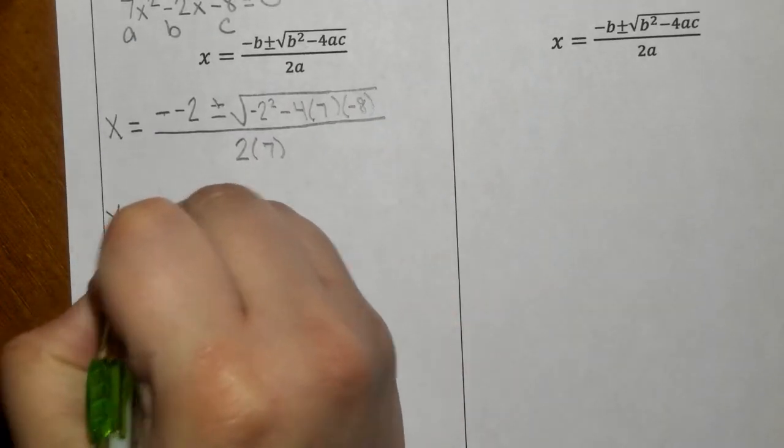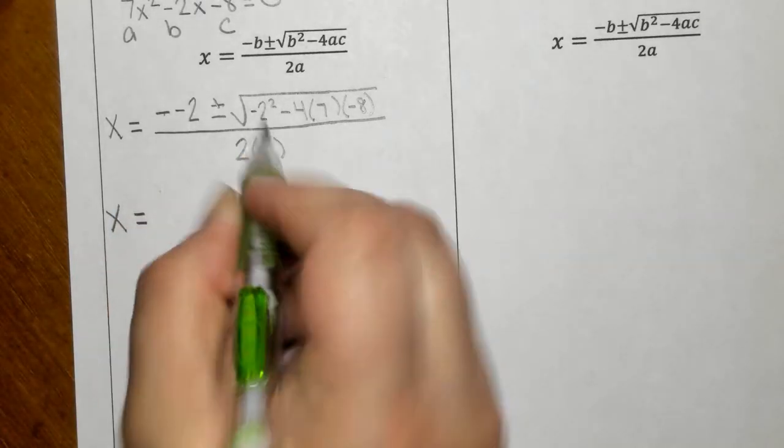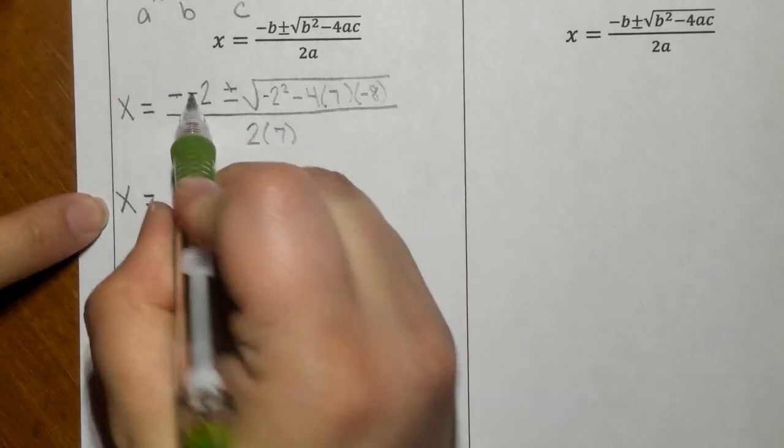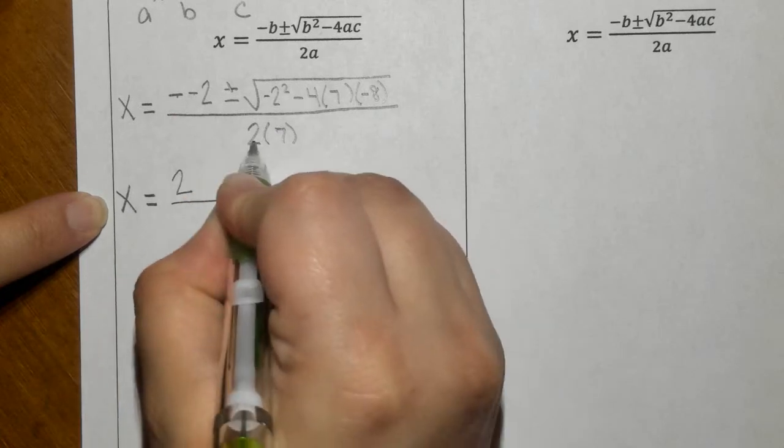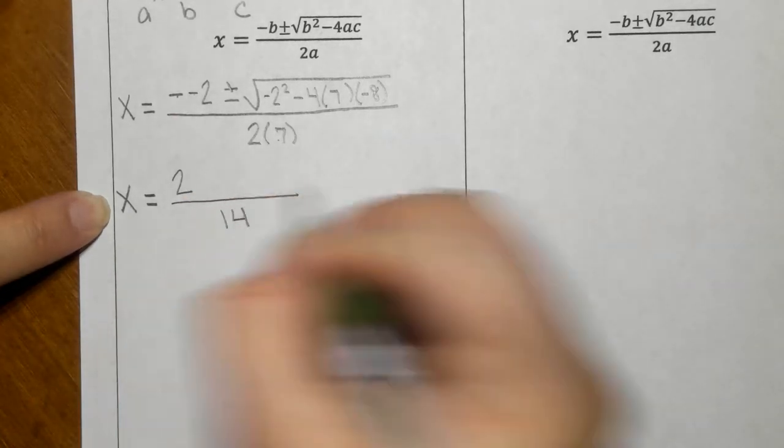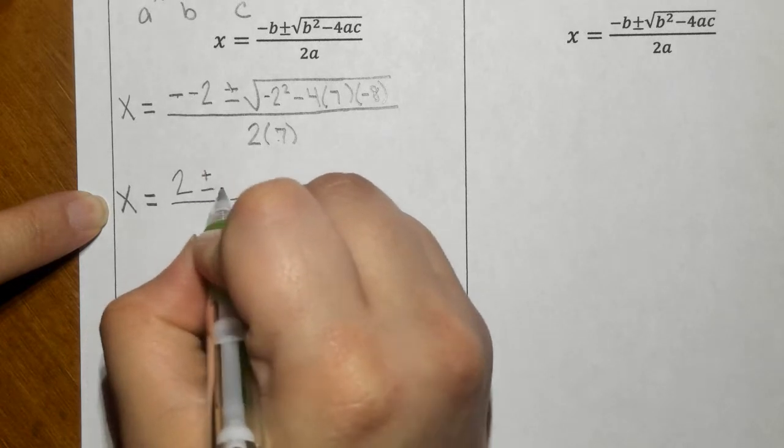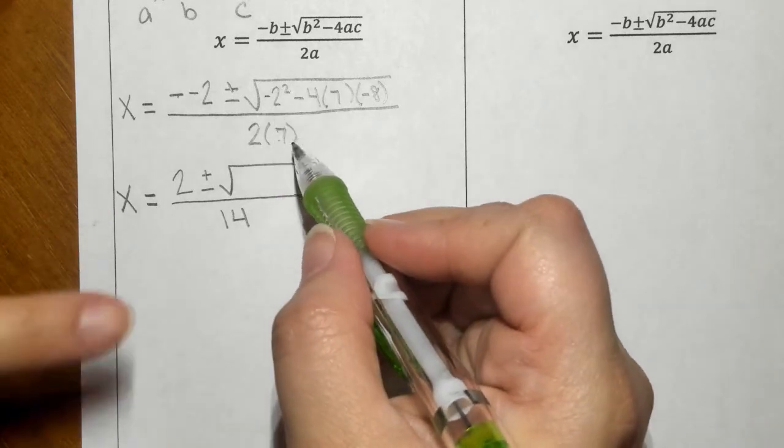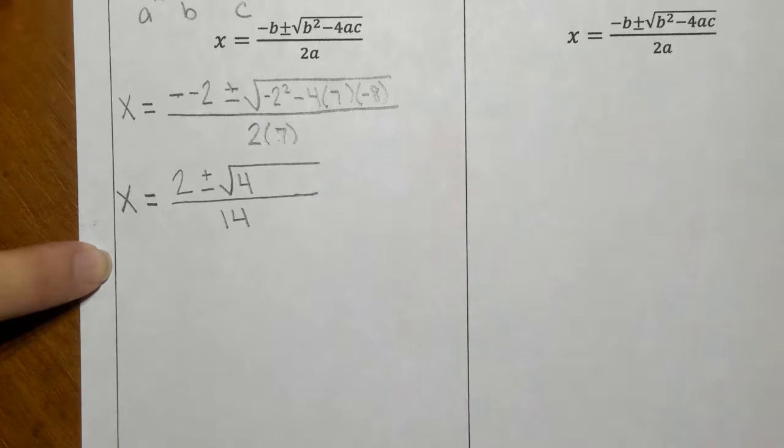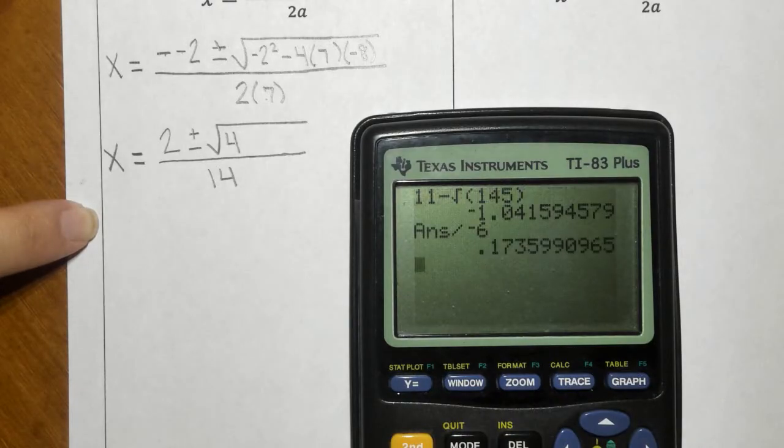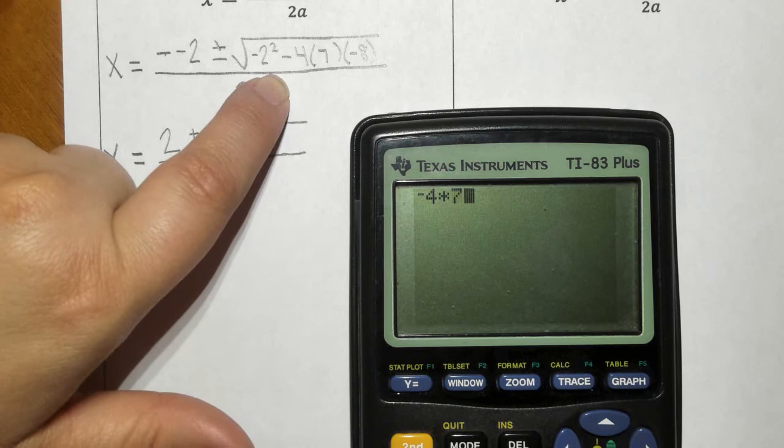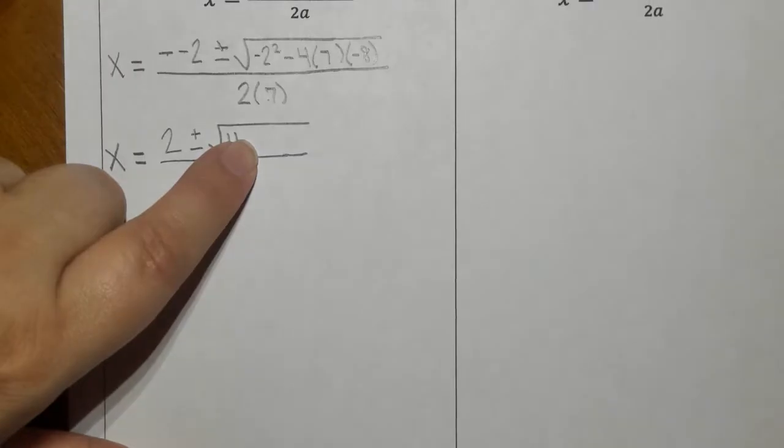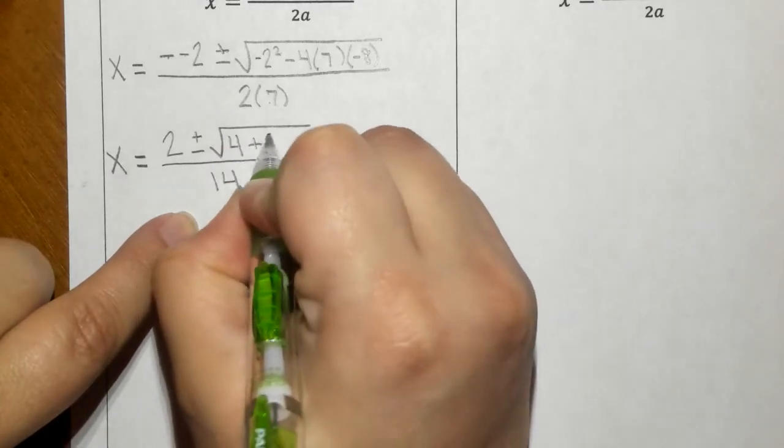So now the next step is to simplify the three parts of the problem. Part one and part three are really easy. Double negative makes positive two, and two times seven is simply 14. Negative two squared really means negative two times negative two, that's four. Then we have negative four times seven times negative eight. This equals a positive 224, so plus 224.